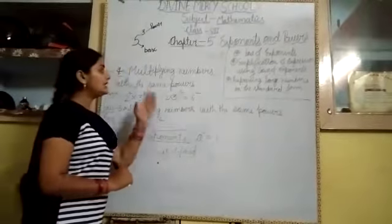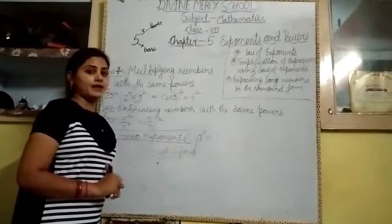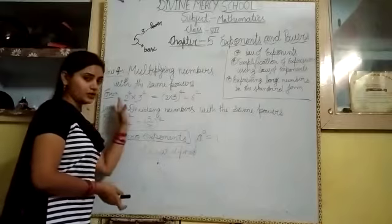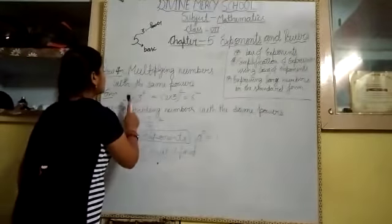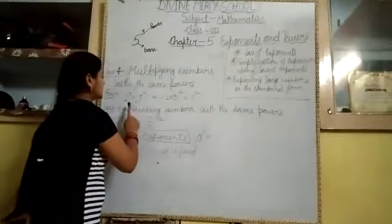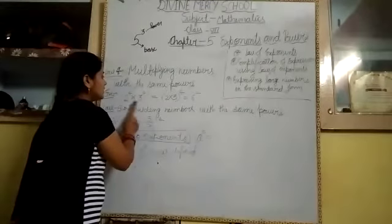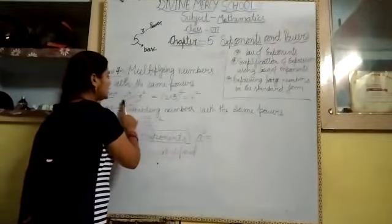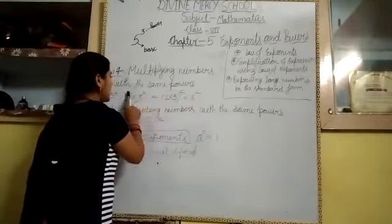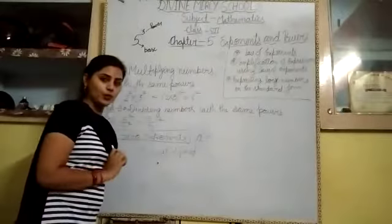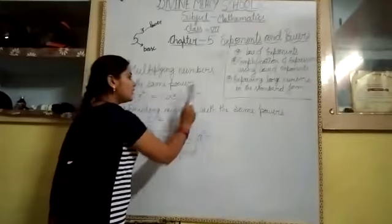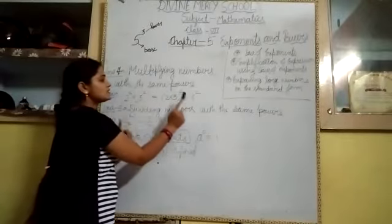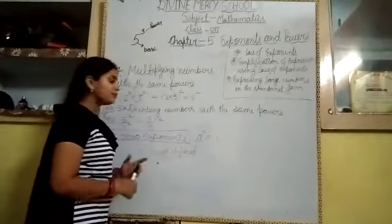Now, rule number four: multiplying numbers with the same power. If bases are different and powers are the same, then what we have to do? For example, two power four into three power four — the powers are the same but the bases are different. If the base is different, then we multiply the bases: two into three, and the power stays the same, which is four. So the result is six power four. That means two power four into three power four equals six power four.